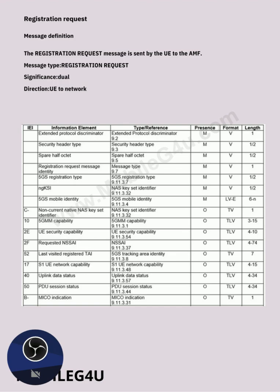In the Presence column we have fields like M, O, and C — M means Mandatory, O means Optional, and C means Conditional. M means this IE should be present in the message at all times. If you check the logs and see a Registration Request, these mandatory IEs should always be available: Extended Protocol Discriminator, Security Header Type, Spare Half Octet, Registration Request Message Identity, 5GS Registration Type, NAS Key Set Identifier (ngKSI), and 5GS Mobile Identity.